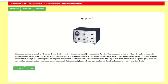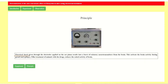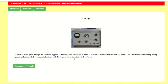Now we will see the principle. Electrical shock given through the electrodes applied on the ear pinna results in a burst of excitatory neurotransmitters from the brain. This activates the brain activity during grand mal epilepsy. Prior treatment of animals with the drug reduces the excited activity of the brain. This was the principle, and we are going to produce grand mal epilepsy.